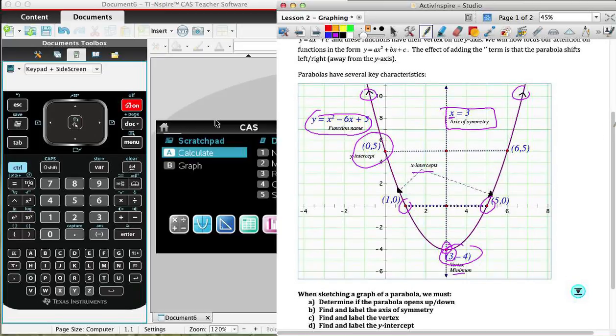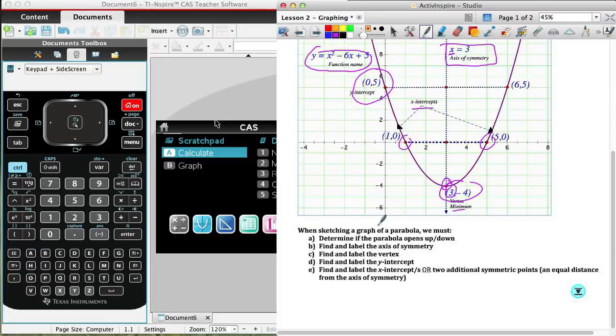Okay. And so below you see a little checklist of what it is that you have to provide when you sketch a graph of a parabola, determine if it opens up or down. We have to find and label the axis of symmetry, find and label the vertex, find and label the y-intercept. And then this is important. We're going to find and label the x-intercepts all. And so if there aren't any x-intercepts, then we are going to need to find two additional points that we can use in our graph.